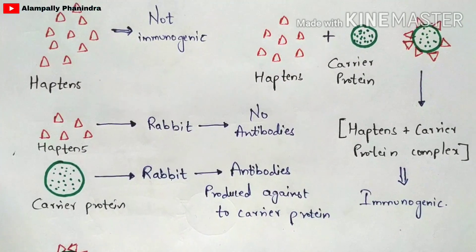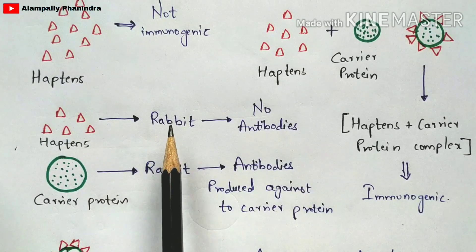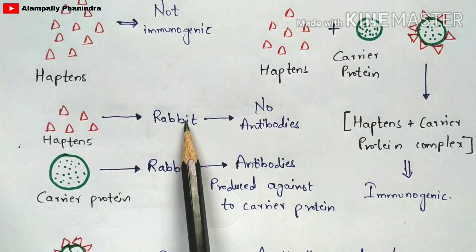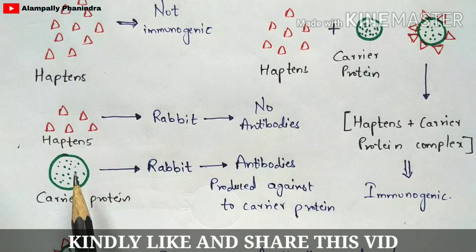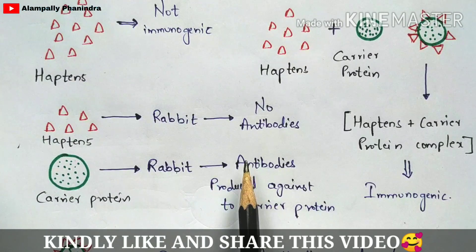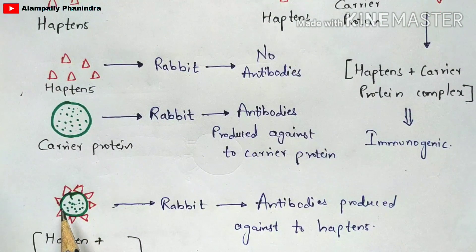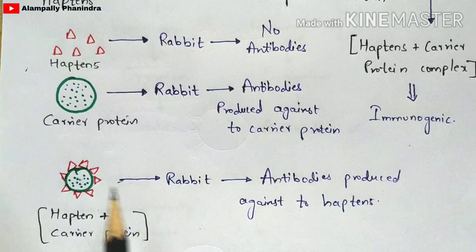In an experiment using a rabbit: if normal haptens without carrier protein are injected, the immune cells produce no antibodies. If only carrier protein without haptens is injected, antibodies are produced but only against the carrier protein. However, if the hapten plus carrier protein complex is injected, antibodies are produced specifically against the haptens.